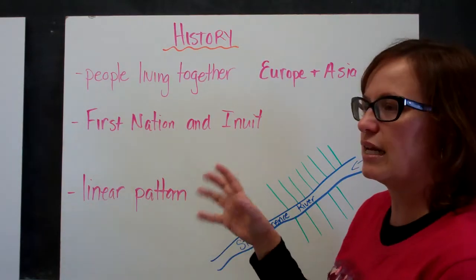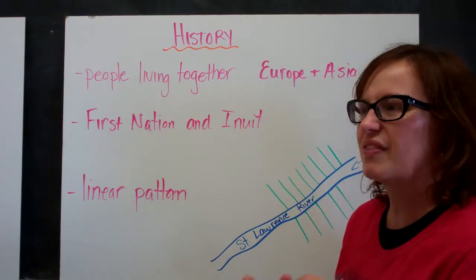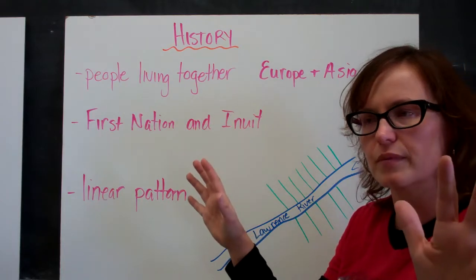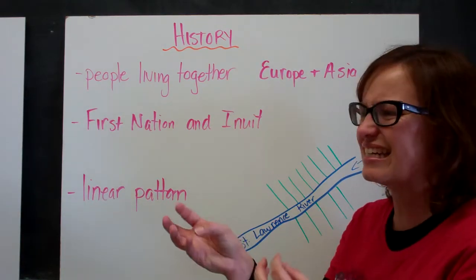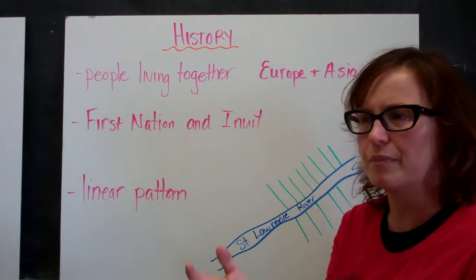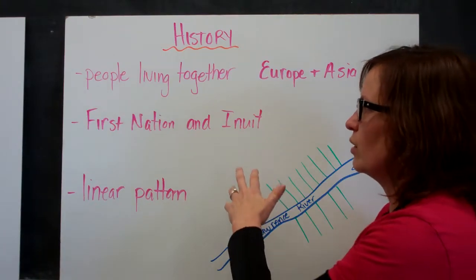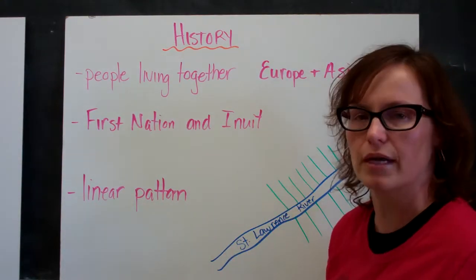If we think about First Nations and Inuit in Canada, they have been living here for thousands of years, but they were never really clustered. They were always scattered across North America or Turtle Island because they didn't live in communities like European settlers did. In fact, we didn't have these clustered communities in North America until colonization.